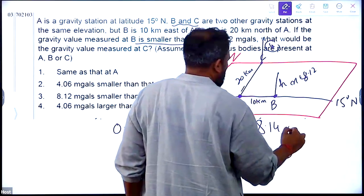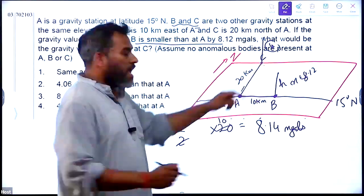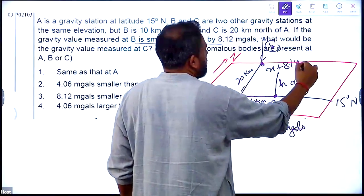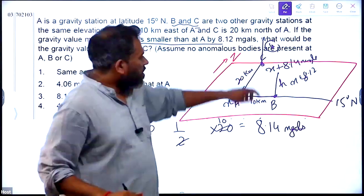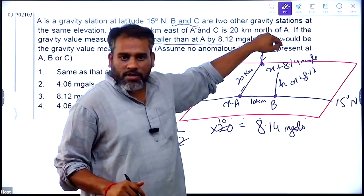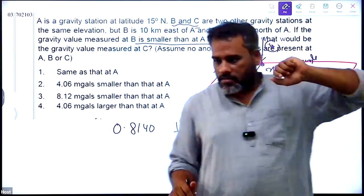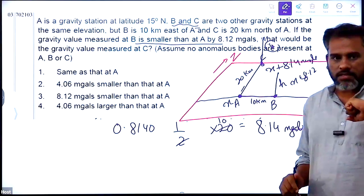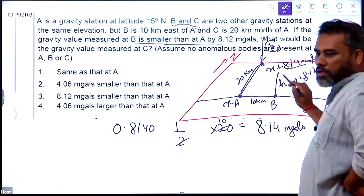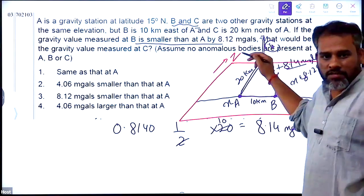8.14 milligals. So if I am going here to here, the gravity at this point, not at that height, should be x plus 8.14 milligals. But you have to increase the height, so it will decrease by 8.12. So it will be x. Is it making sense? Because you are moving north, gravity will increase by 8.14, and then you increase the height, it will decrease by 8.12, so it will be more or less x only.